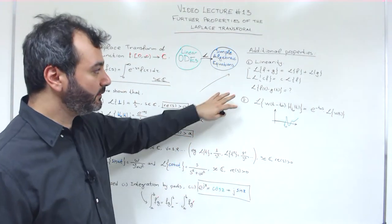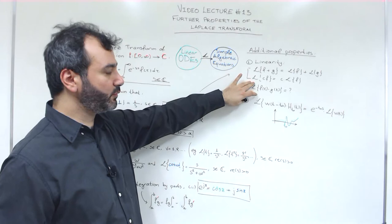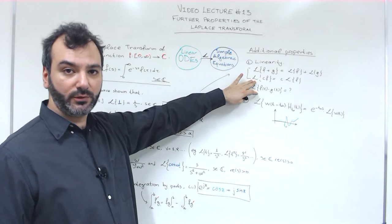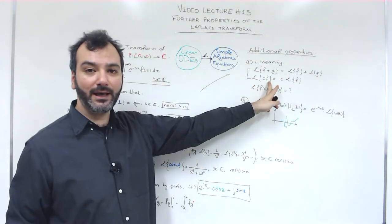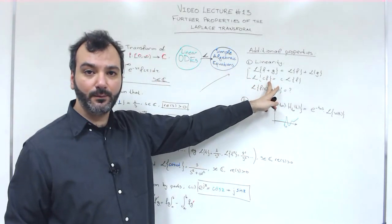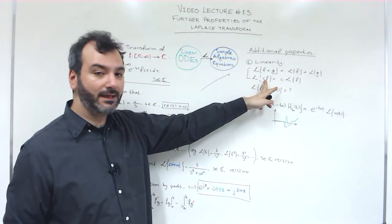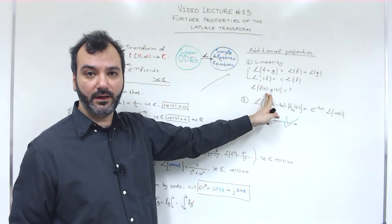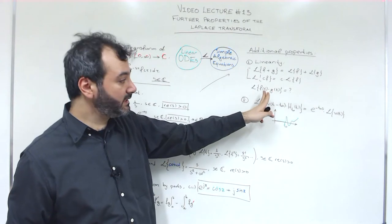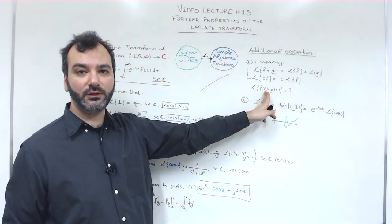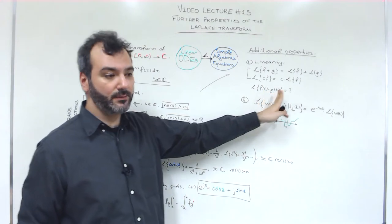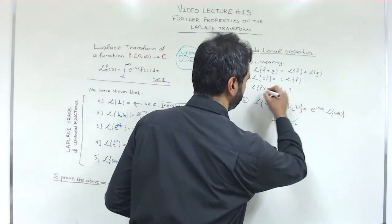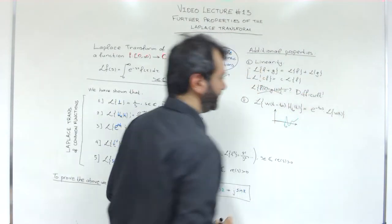Linearity is one very important property of the Laplace transform. Don't get confused: the second property suggests that whenever we multiply a function f by a constant c, we can take this c outside. However, whenever we multiply two functions with one another, we cannot do that. The Laplace of a product is absolutely not equal to the Laplace of one function times the Laplace of the other — this can be extremely difficult to compute.